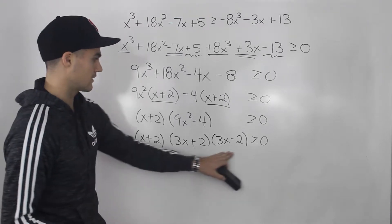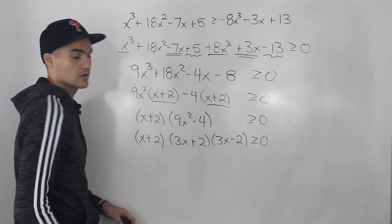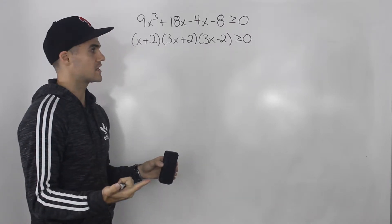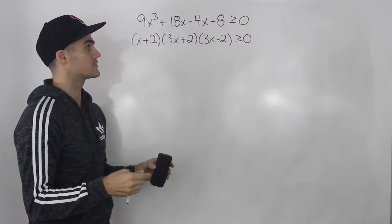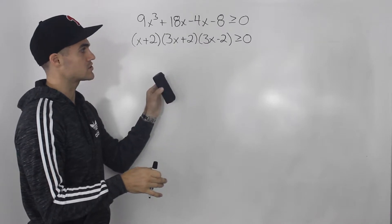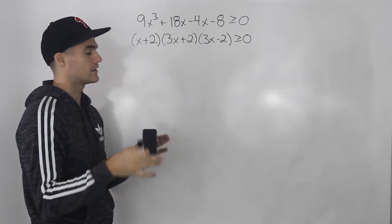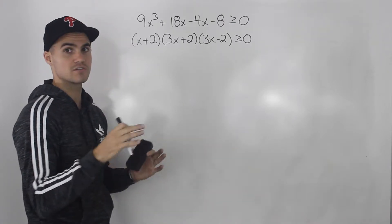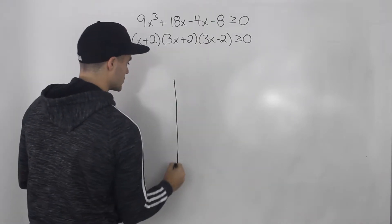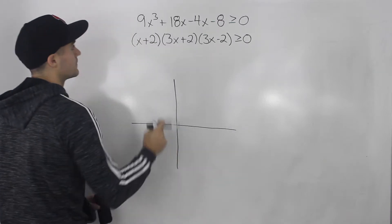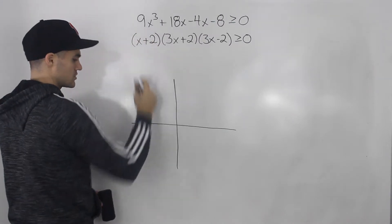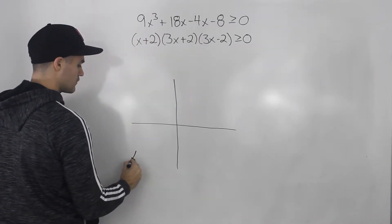Now we have this factored polynomial and we have to find when is it greater than or equal to zero. There are a couple of ways to solve this — you can do it by graphing or with a sign chart. We've gone over both ways in the lecture videos, and I'm going to show you both in this video. You should do both ways whenever you get questions like this, so you can see how the sign chart and the graph relate and increase your understanding. So if we are to graph this, let's start off with the end behaviors. This is an odd degree with a positive leading coefficient.